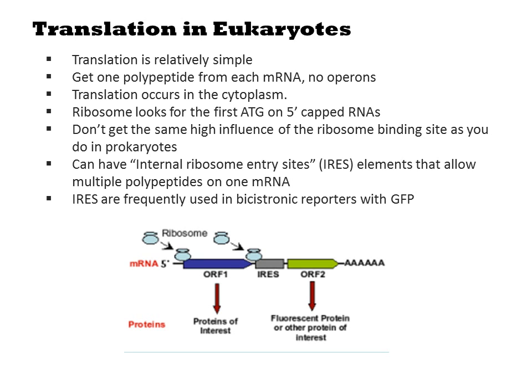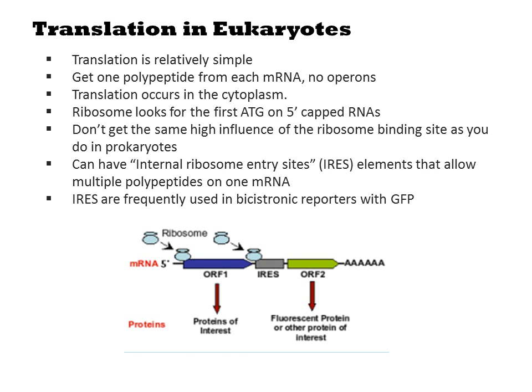Sometimes the lack of operons is limiting for engineering. One solution is to encode internal ribosome entry sites, or IRES elements, that allow multiple polypeptides to be encoded on one mRNA molecule. IRES elements are frequently used in bicistronic reporters with GFP, such that you can confirm the expression of the first gene by monitoring the phenotype caused by the second gene — usually a fluorescent protein or an antibiotic resistance gene.